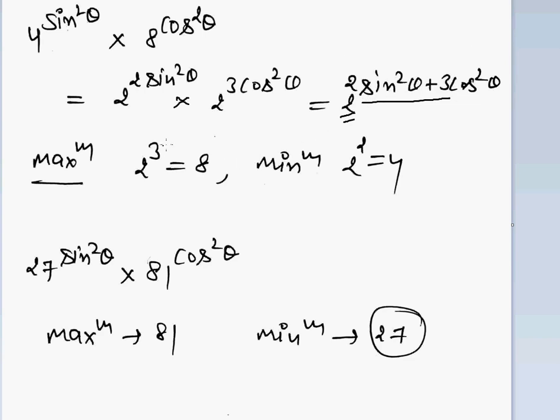I already solved: maximum value is 3 and minimum value is 2. But in this case also you can apply the previous trick. What is the minimum between 4 and 8? 4. The minimum value is 4. What is the maximum between 4 and 8? 8. The maximum value is 8. See another example: minimum is 27, maximum is 81.